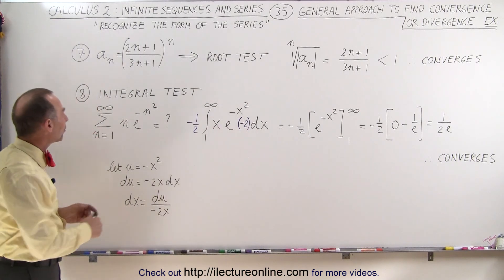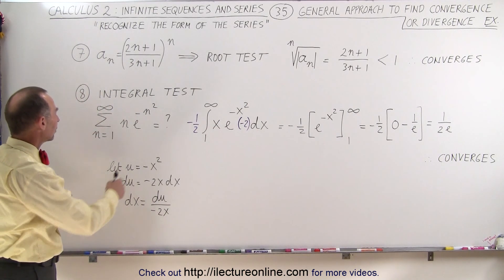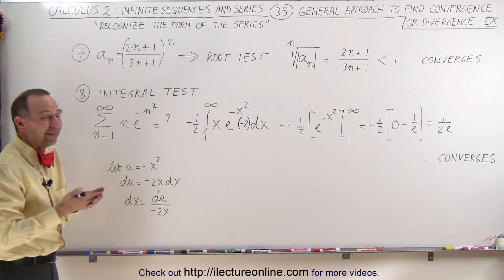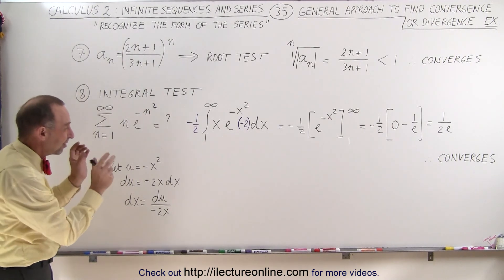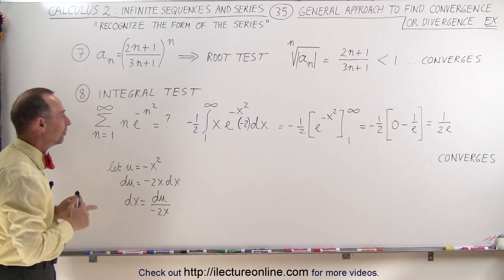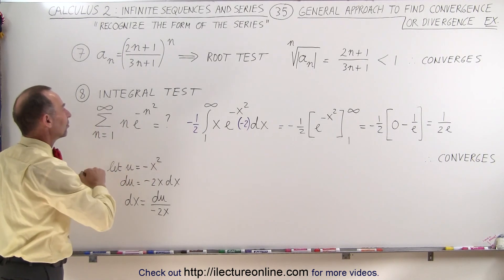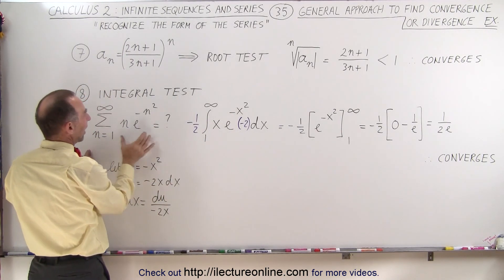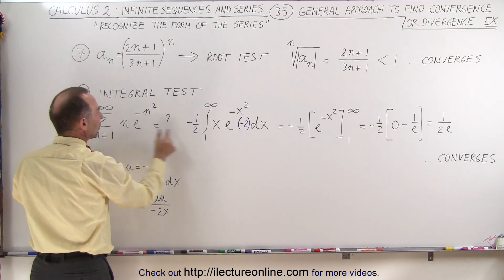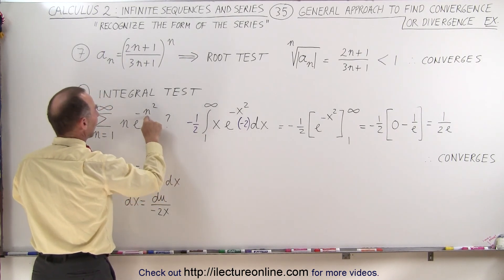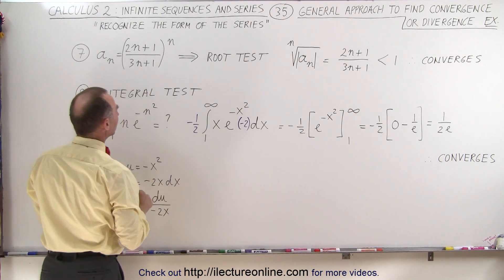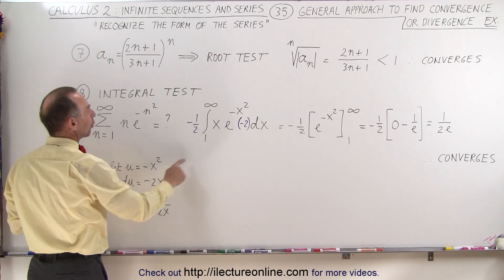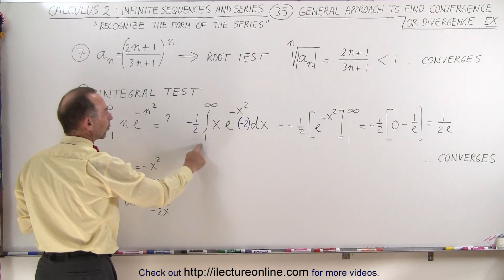For the last example we're going to use the integral test. We're going to take this infinite series and write it as an integral, because basically that's what an infinite series is — it's in increment steps, while the integral is a continuous step. Notice that if we write this as an integral, instead of n we write x, instead of n squared we write x squared, and then we integrate from x equals 1 to infinity.